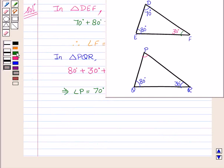Now, from this we see that angle D is equal to angle P is equal to 70 degrees, and angle E is equal to angle Q is equal to 80 degrees, and angle F is equal to angle R is equal to 30 degrees.